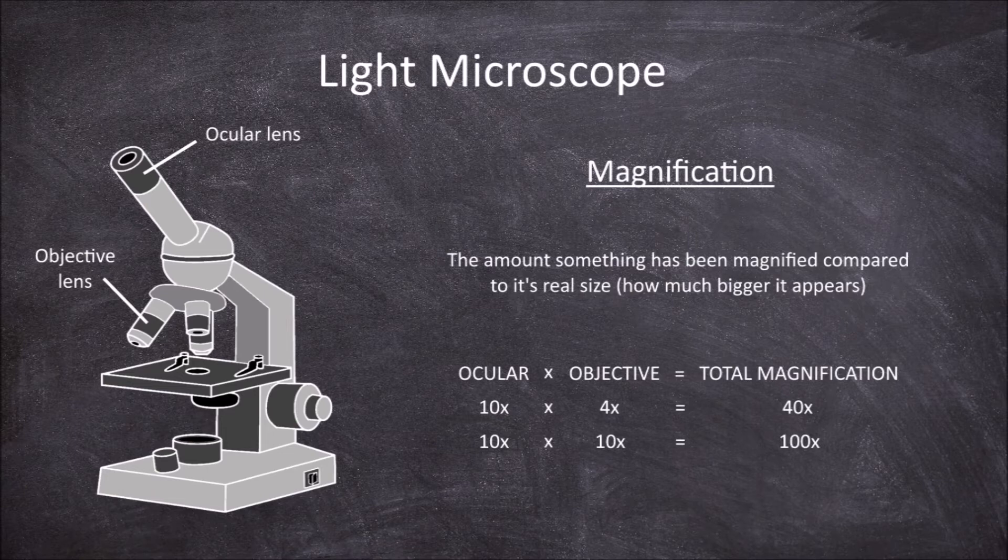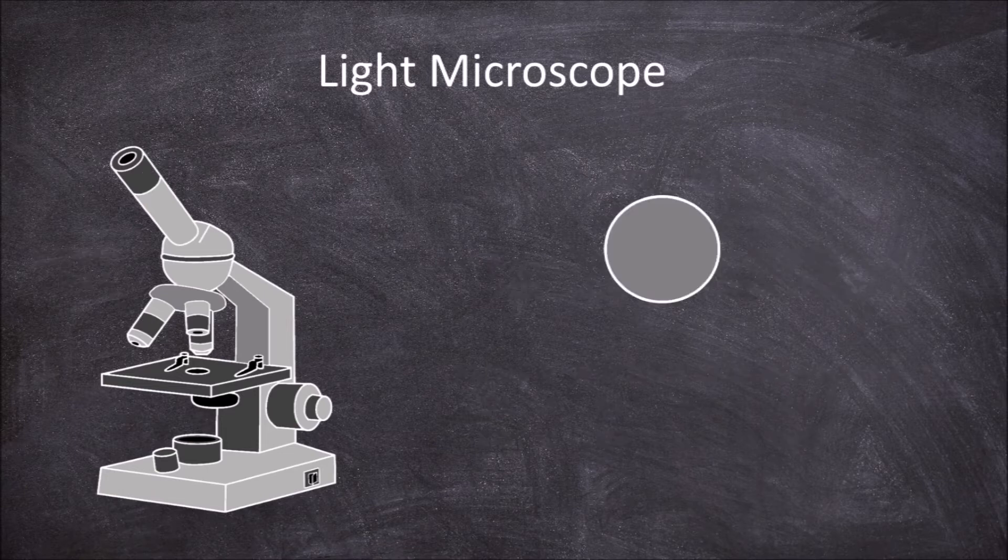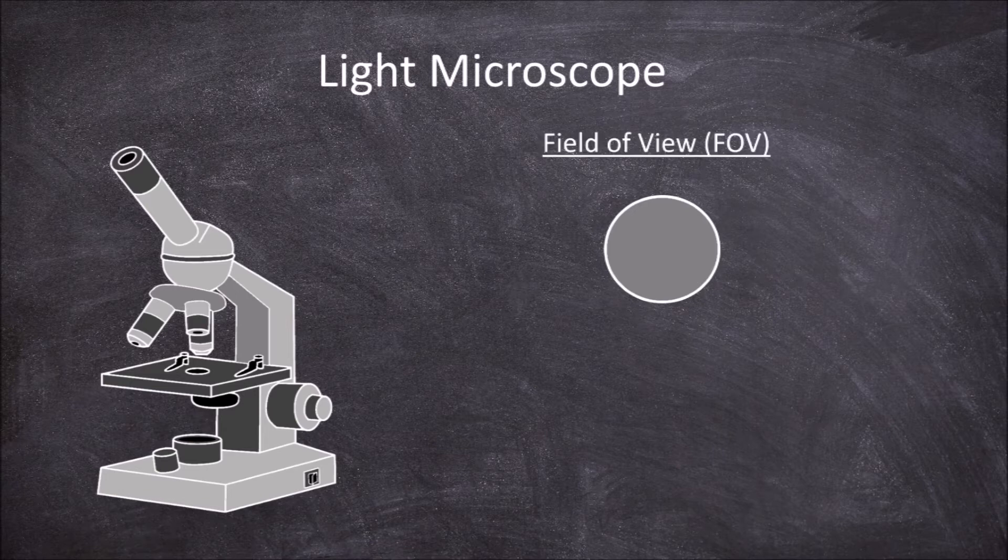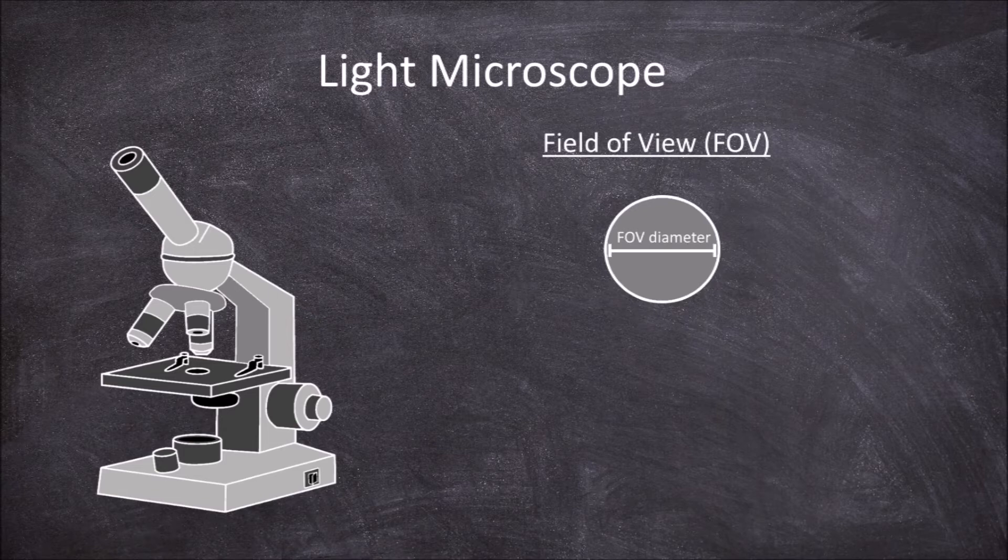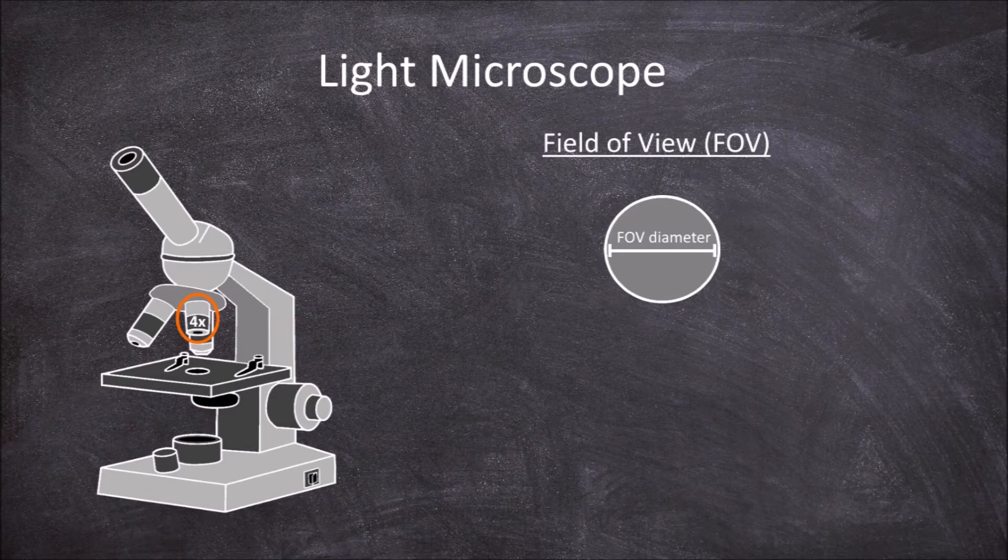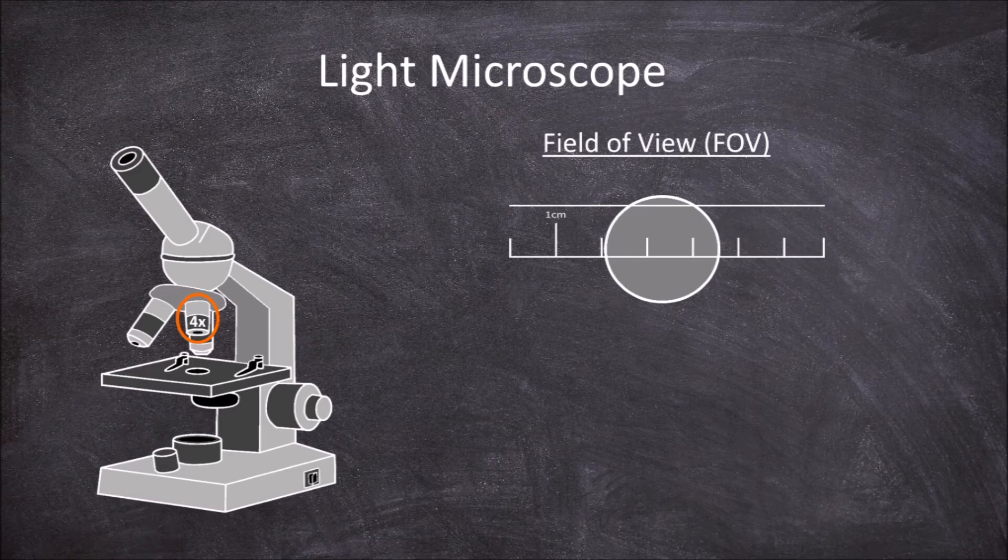When looking through the microscope, there is going to be a circular area you can see. This is called the field of view. The field of view diameter is simply the diameter of this field of view. When on low power magnification, you can measure the field of view diameter directly by placing a transparent ruler under the objective. You then need to focus the microscope to the lines on the ruler and measure the diameter in millimeters. So here we would have a diameter of 2.5 millimeters, rounded to one significant digit.